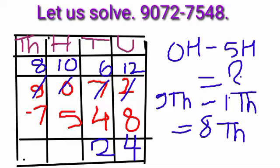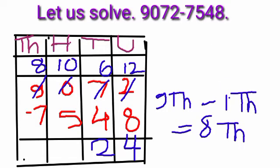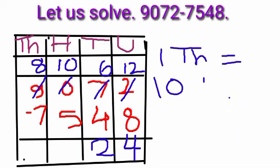8 thousands remains in the thousands place. 1000 equals 10 hundreds.